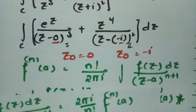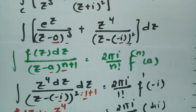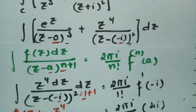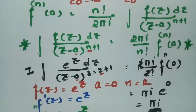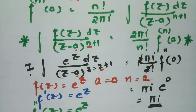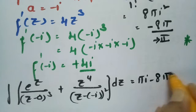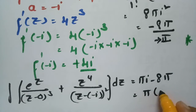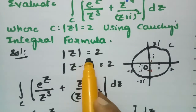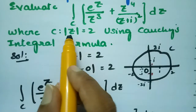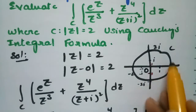Adding the two integrals together: ∫ [e^z / (z−0)³ + z⁴ / (z−(−i))²] dz = πi + (−8π). Taking π as common factor, the final answer is π(i − 8).